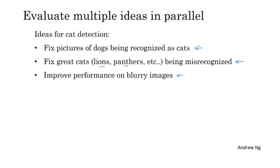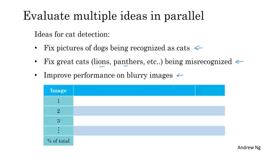So if carrying out error analysis to evaluate these three ideas, what I would do is create a table like this. And I usually do this in a spreadsheet, but using an ordinary text file would also be okay. And on the left side, this goes through the set of images you plan to look at manually. So this maybe goes from one to a hundred if you can look at a hundred pictures. And the columns of this table or the spreadsheet will correspond to the ideas you're evaluating: the dog problem, the problem of great cats, and blurry images. And I usually also leave space in the spreadsheet to write comments.